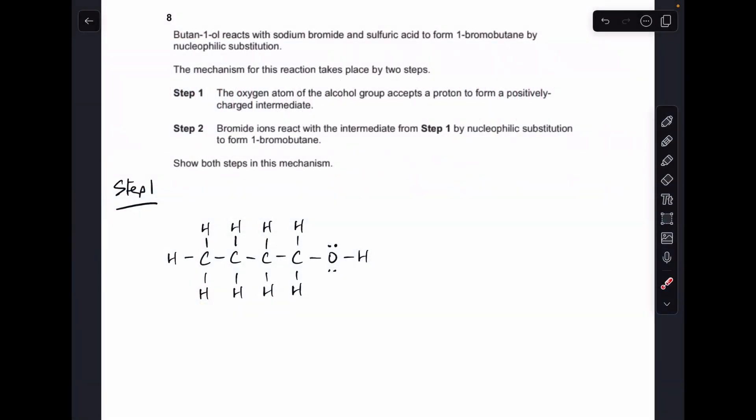So starting with step 1, we're told the oxygen atom of the alcohol group accepts a proton to form a positively charged intermediate. I need to draw a proton relatively close to that oxygen. Notice that I've already put in the two electron pairs, the two lone pairs on the oxygen.